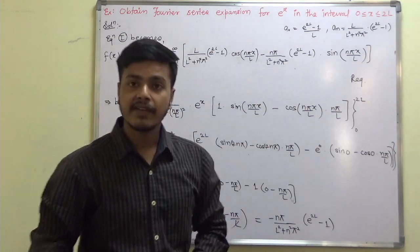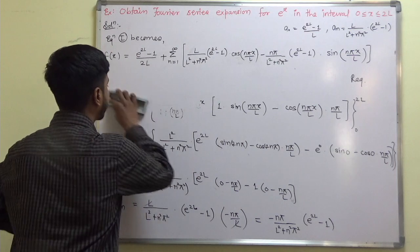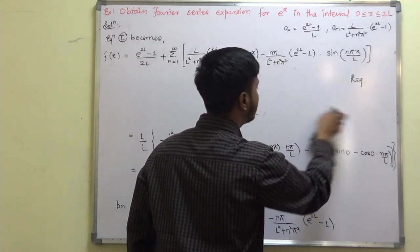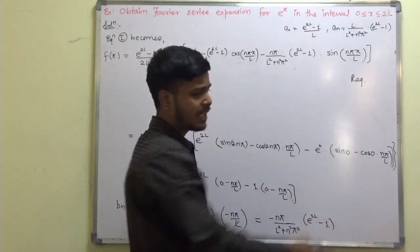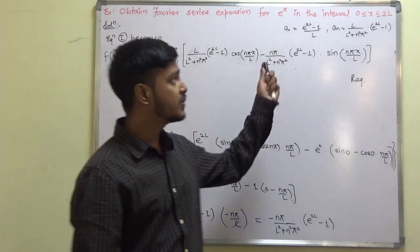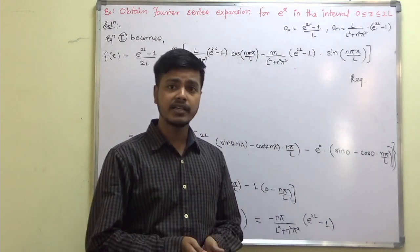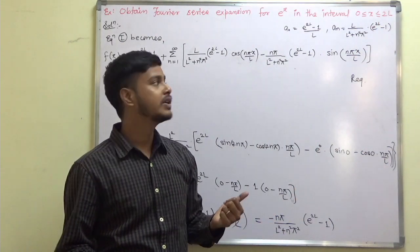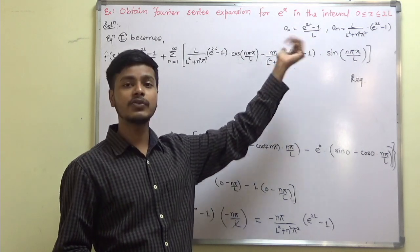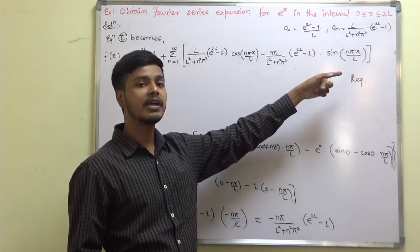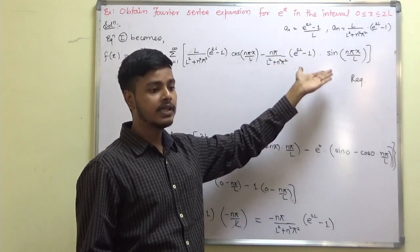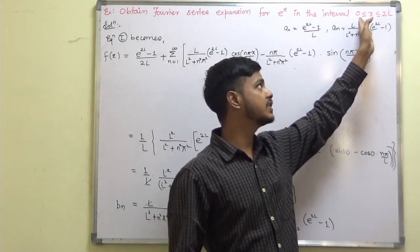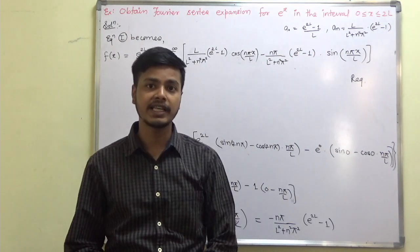This problem is taken in general with interval 0 to 2L. Sometimes it may happen that L takes a specific value — for example, if L = 2, the interval becomes 0 to 4; if L = 1, the interval is 0 to 2. In the very next class, we are going to take that kind of specific problem.